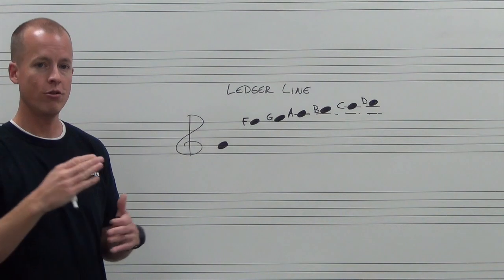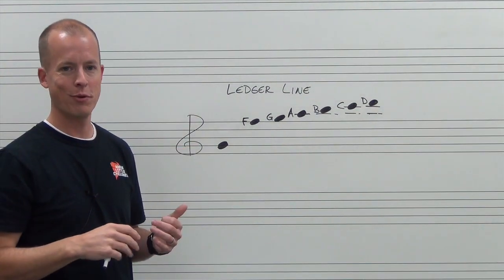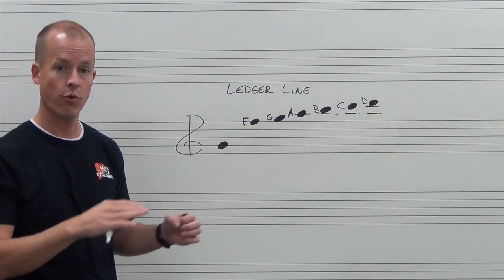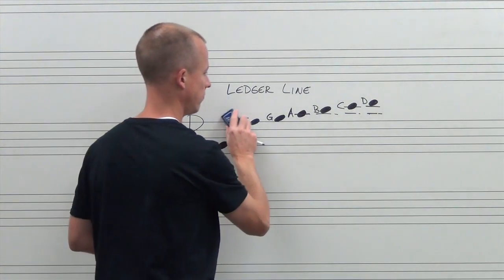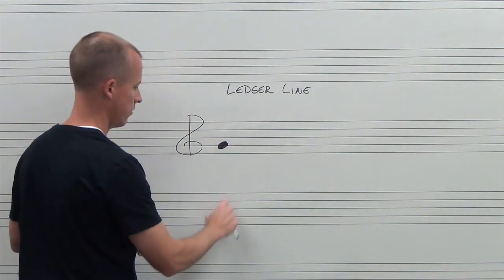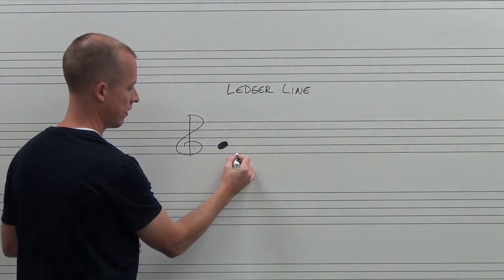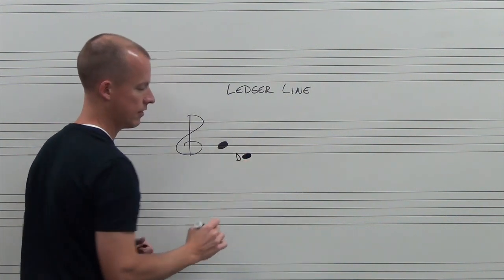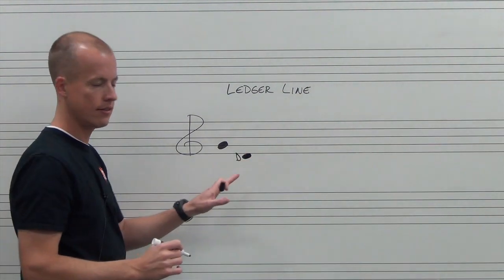So no matter how high it goes, and it can go as high as we want, we can figure out any note that way. Okay, we use the same system for low notes. So G, F, E, and then the note below the first line is D. This note is below the first line, it's D.